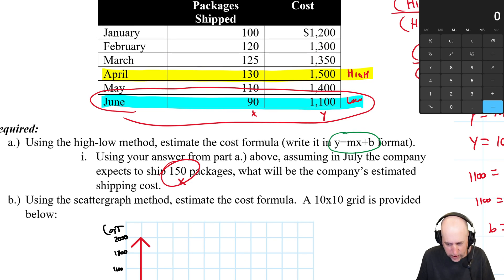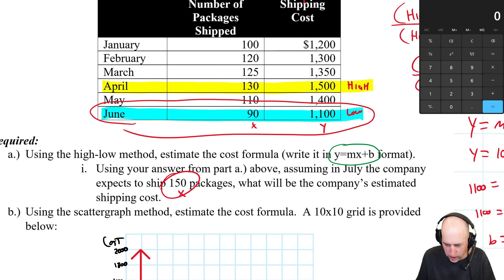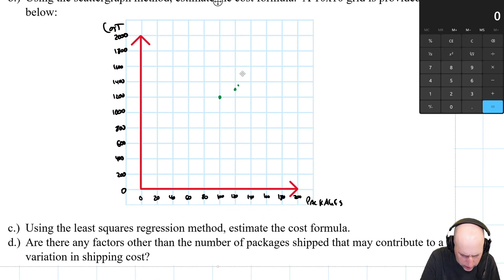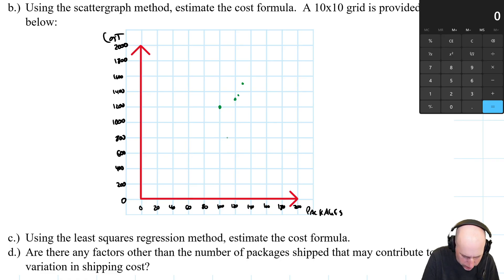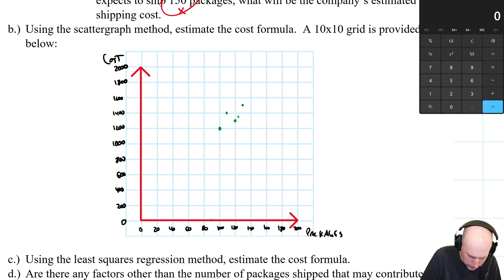125, 1350. Oh, this is kind of ugly. 125 and 1350, right there I'm guessing. 130 and 1500. So it's halfway, right in the middle of that one. And last but not least, 90 and 1100. So it's halfway, right in the middle of this one.